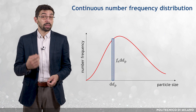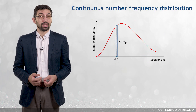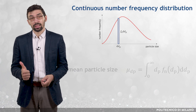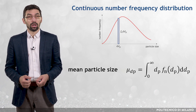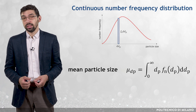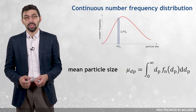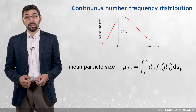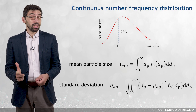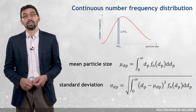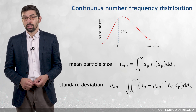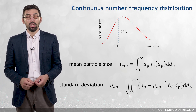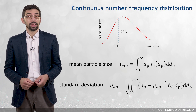Two important statistical parameters can be obtained from the f_n distribution. The mean particle diameter, called μ_dP, is the integral from zero to infinity of dP times f_n(dP) times d(dP). The standard deviation of particle diameters, called σ_dP, is the square root of the integral from zero to infinity of (dP minus μ_dP) squared times f_n(dP) times d(dP).